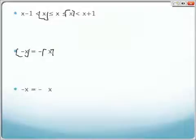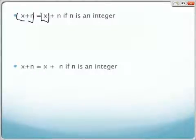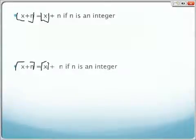The floor function of negative x is equal to the negative of the ceiling function of x, and the ceiling function of negative x is equal to the negative of the floor function of x. The floor function of the quantity x plus n is equal to the floor function of x plus n, if n is an integer. Likewise, the ceiling function of the quantity x plus n is equal to the ceiling function of x plus n.